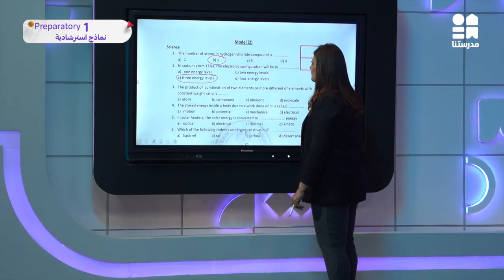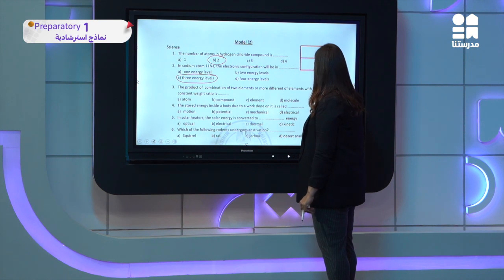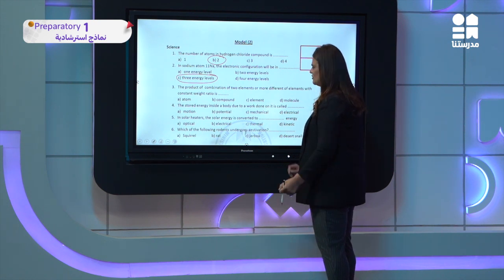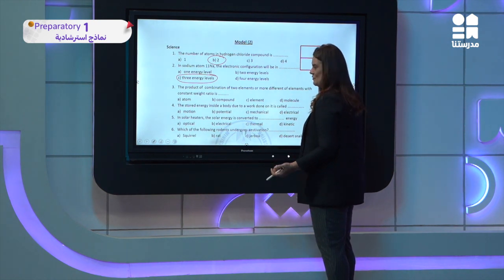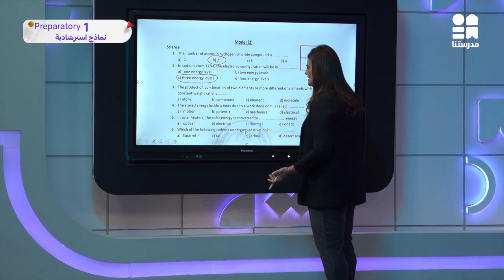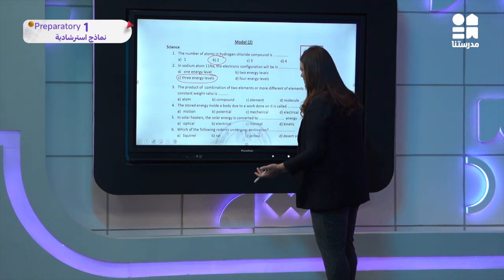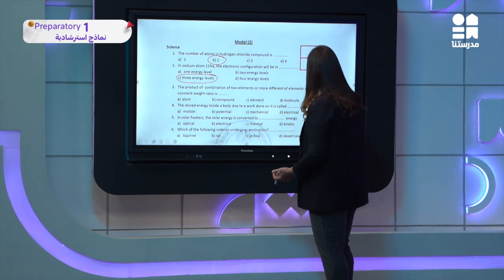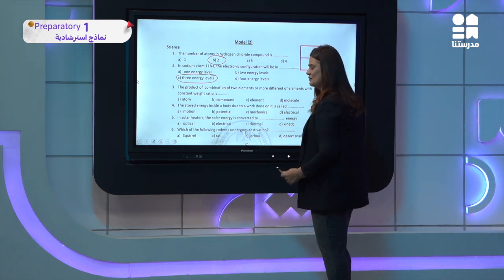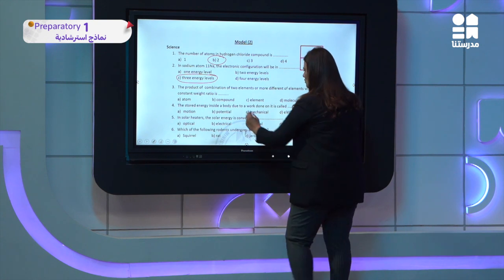The products of combination of two or more different elements with a constant ratio — this defines a chemical compound formed from different elements.